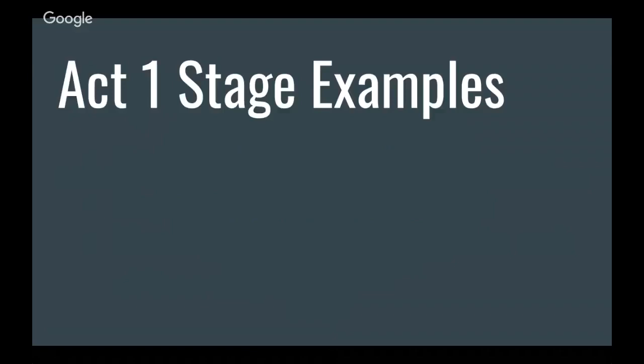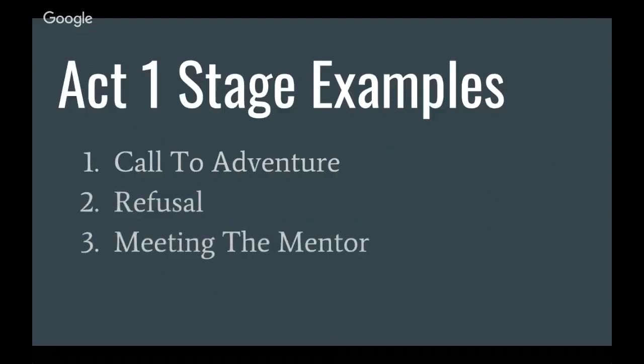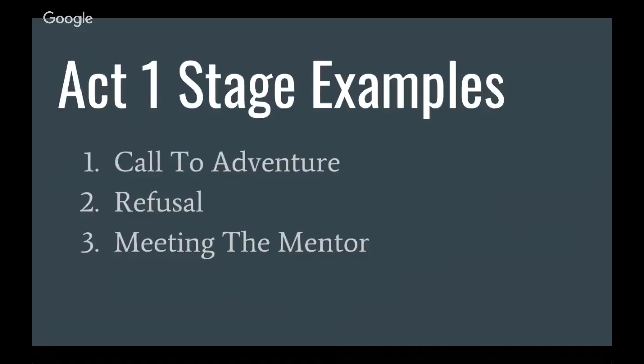Let's take a look at some examples for an act one stage. In act one you're going to get the call to adventure, the refusal of the call, the hero's going to meet the mentor. Those are three examples. There's a couple others. In the modern monomyth, particularly in a lot of my writings, I've broken out yet another stage which I call the mundane world. There's also crossing the threshold. That's another stage. Belly of the whale is another stage. Those are all stages that are for the most part utilized in all monomyth-type stories.